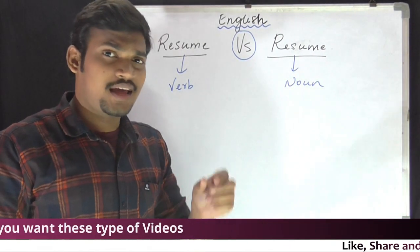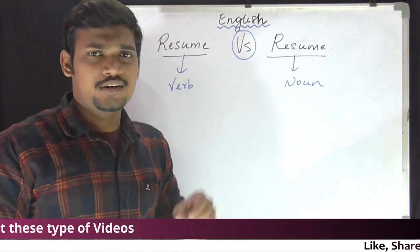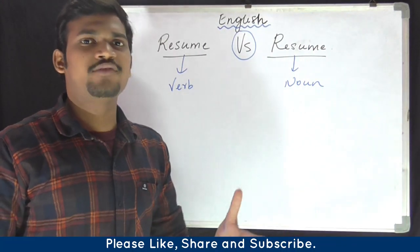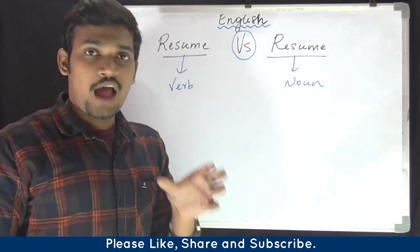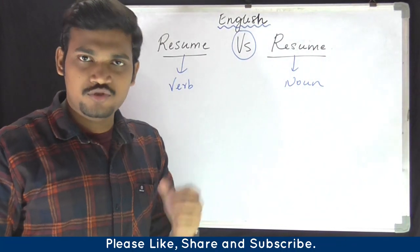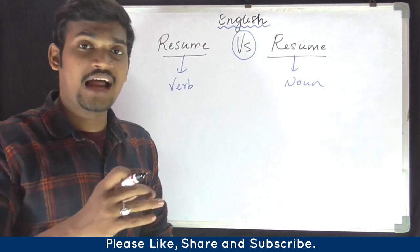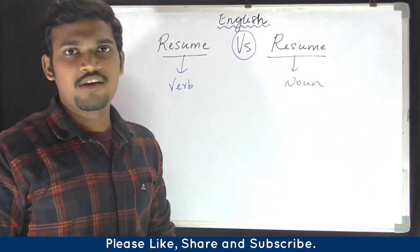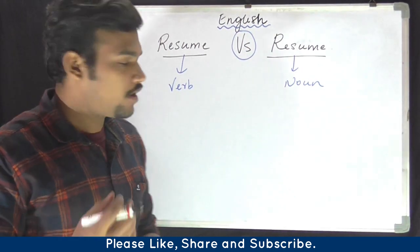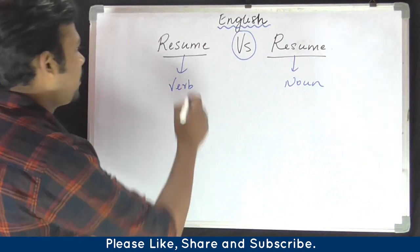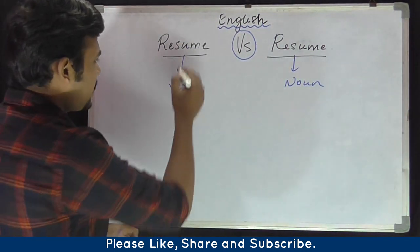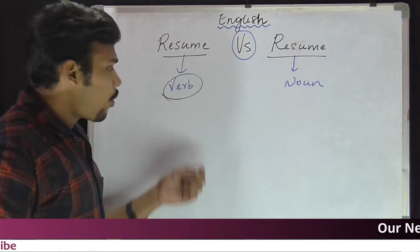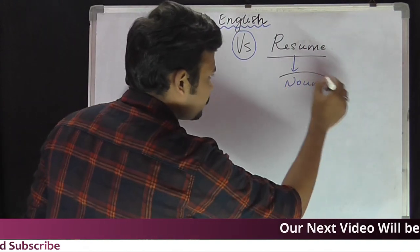We know that in English, when we choose a word, it can function as a verb, noun, adjective, or adverb. For example, the word 'resume' can be used as both a verb and a noun.